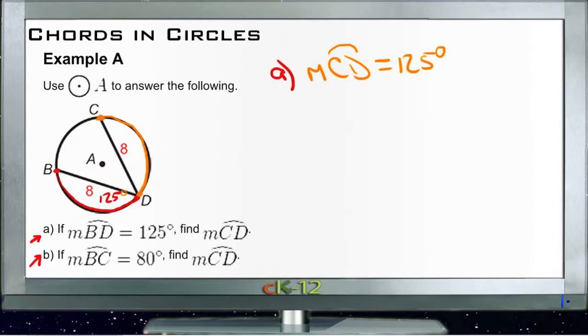Now the second question does not use that same information, so don't get confused and try to apply it again. This one tells us that the measure of BC right here is 80 degrees. And if that's the case, what is the measure of this arc over here now, CD?